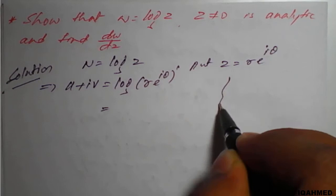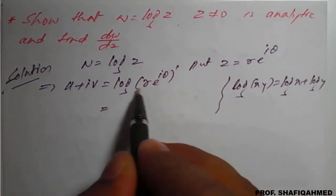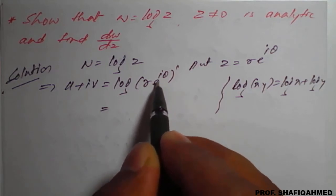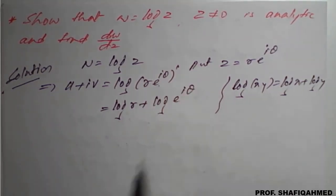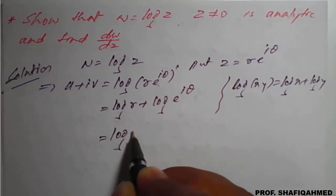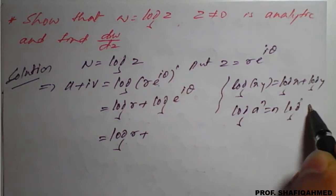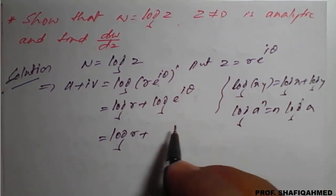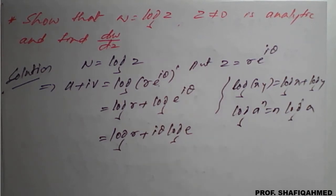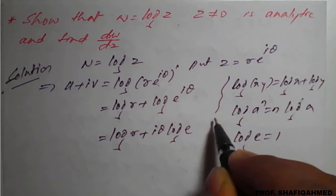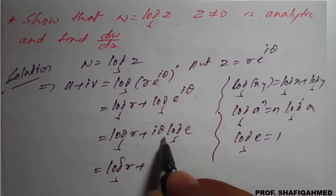So log of r times e raised to i theta. We know that log of xy is log x plus log y. Therefore, this becomes log of r plus log of e raised to i theta. Applying the property log of a raised to n equals n log a, this becomes log r plus i theta times log e. Since log e is always 1, we get log r plus i theta.